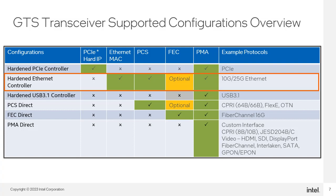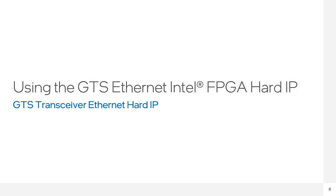This table shows the various configurations supported by the GTS transceiver bank, along with the GTS resources used and example protocols for each configuration. There are six configurations: hardened PCIe, hardened Ethernet, hardened USB 3.1, PCS Direct, FEC Direct, and PMA Direct. The Ethernet configuration is highlighted here. As you can see, it uses the Ethernet MAC, the PCS, and the PMA. Use of the FEC is optional.